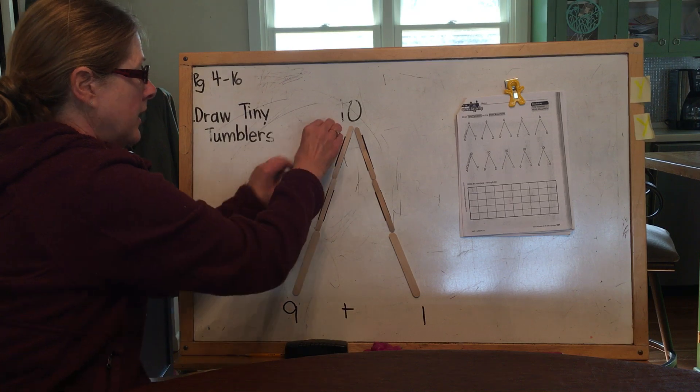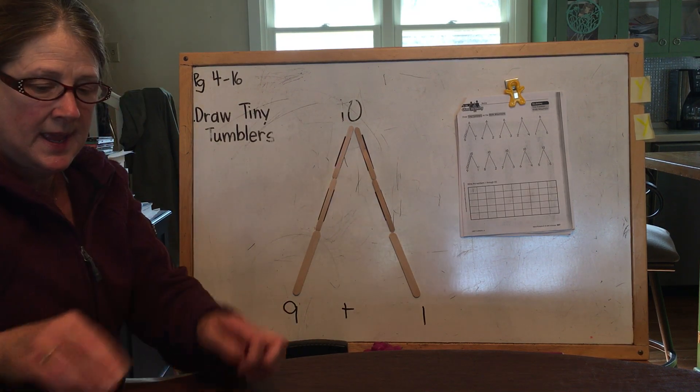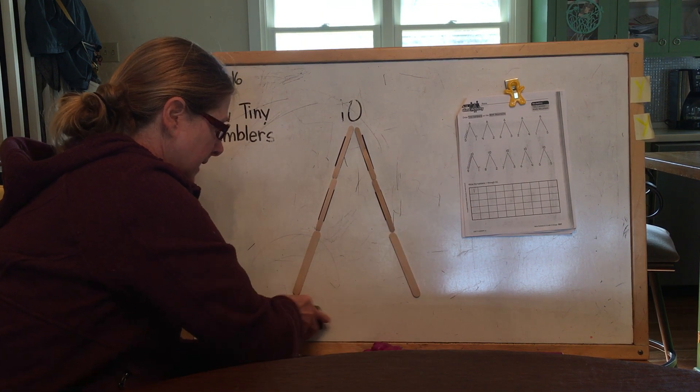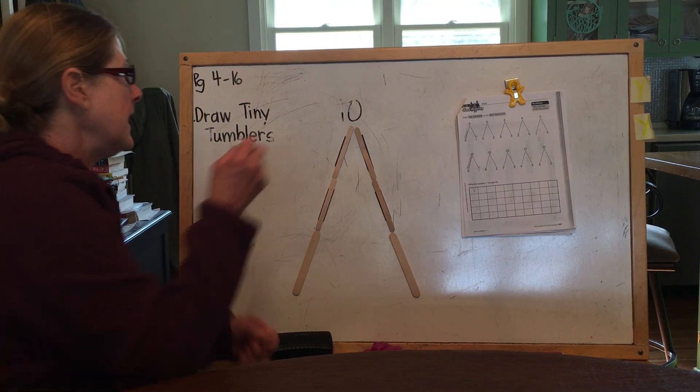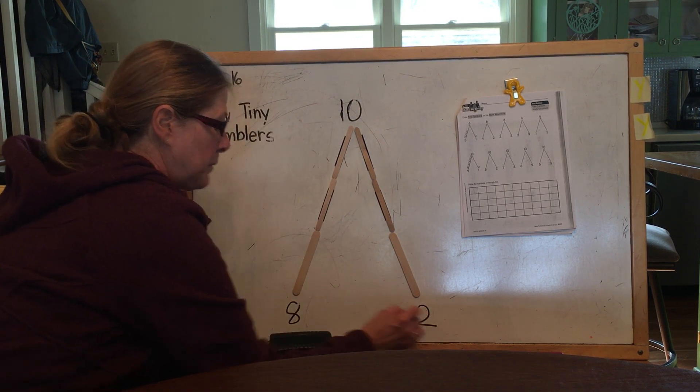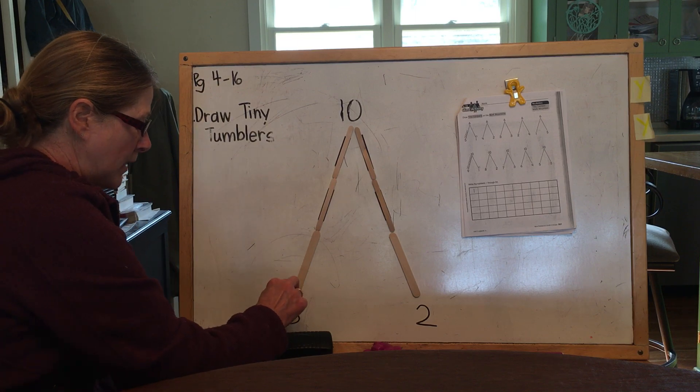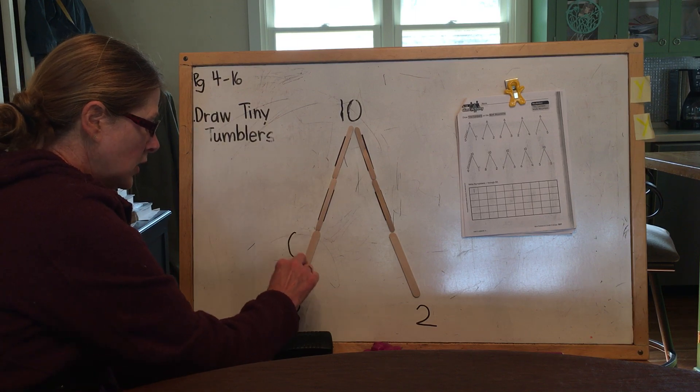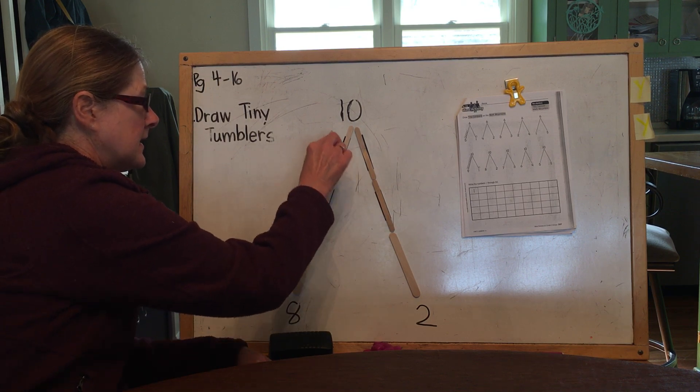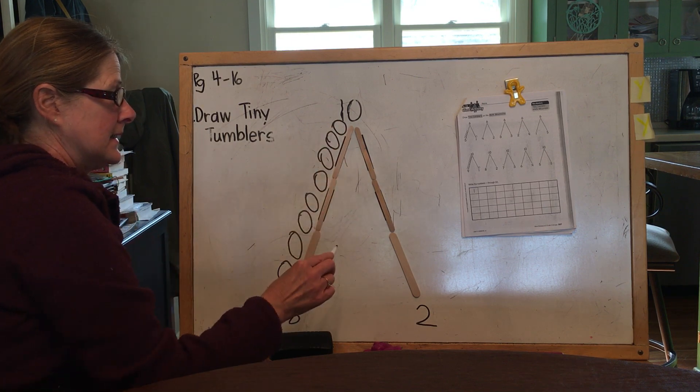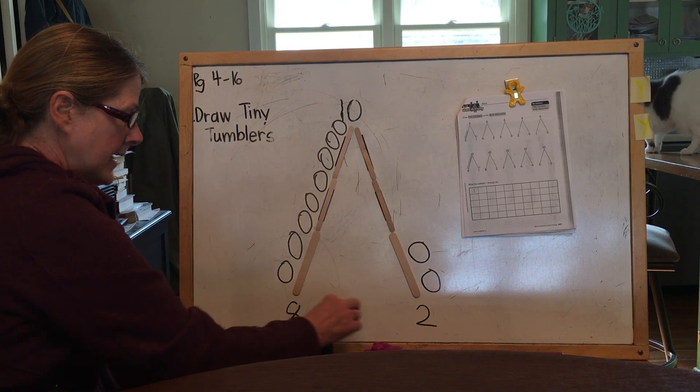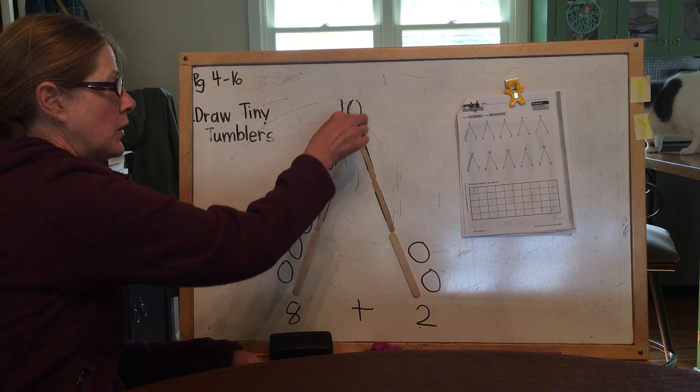And we're going to have to draw the partners of 10. This one tells me that eight and two are partners of 10. So we're still on 10. And all I have to do is represent these partners. I start at the bottom of the math mountain. One, two, three, four, five, six, seven, eight. And on this side, I'll draw two. One and two. Eight plus two equals 10.